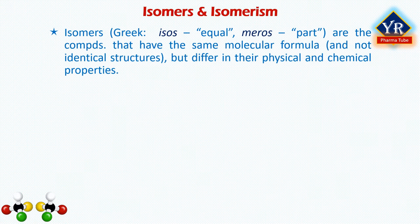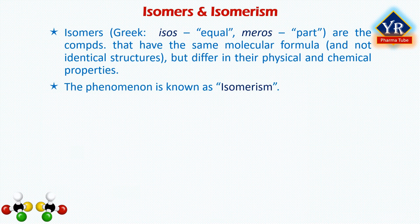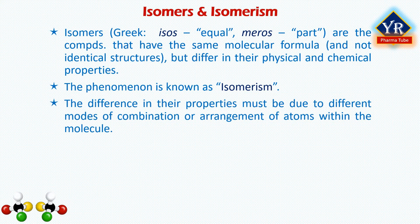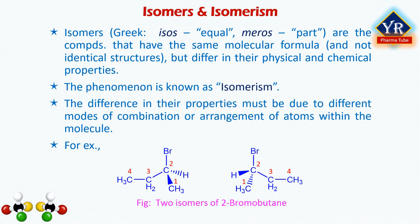Coming to isomers and isomerism. The term isomers has come from two Greek words — isos, meaning equal, and miros, meaning part. Isomers are compounds that have the same chemical formula and non-identical structures but differ in their physical and chemical properties. The phenomenon is known as isomerism. The difference in their properties must be due to different modes of combination or arrangement of atoms within the molecule. For example, the two isomers of 2-bromobutane contain the same chemical formula but differ in physical and chemical properties because of their spatial arrangement. There are many different classes of isomers like stereoisomers, enantiomers and geometrical isomers, which will be discussed in the next lecture.